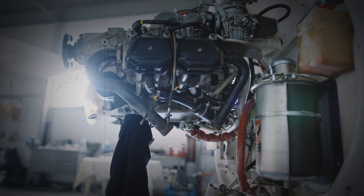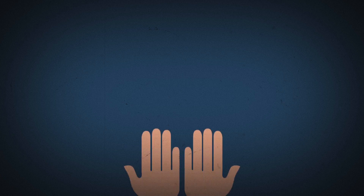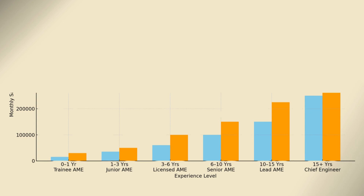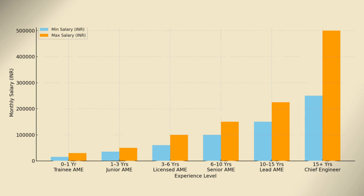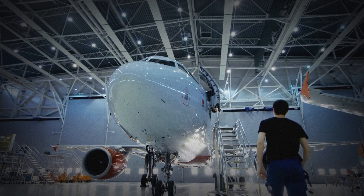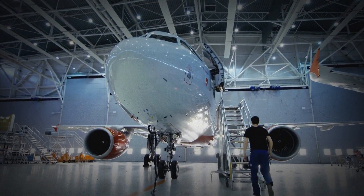Once you become an aircraft maintenance engineer, the salary you can achieve is: as a fresher, you can earn about 3 to 6 lakhs per annum; at the mid-level with experience, about 6 to 12 lakhs per annum; and with senior-level experience, about 12 to 25 lakhs per annum. These numbers are rough figures — your salary actually depends on the location you work in, the aircraft type you work on, and the company you work for.